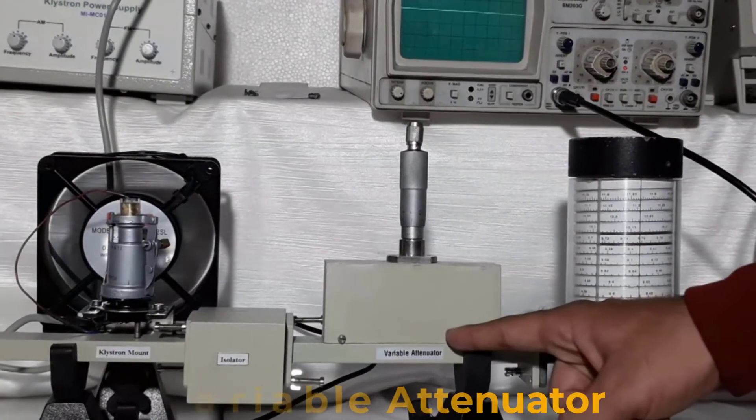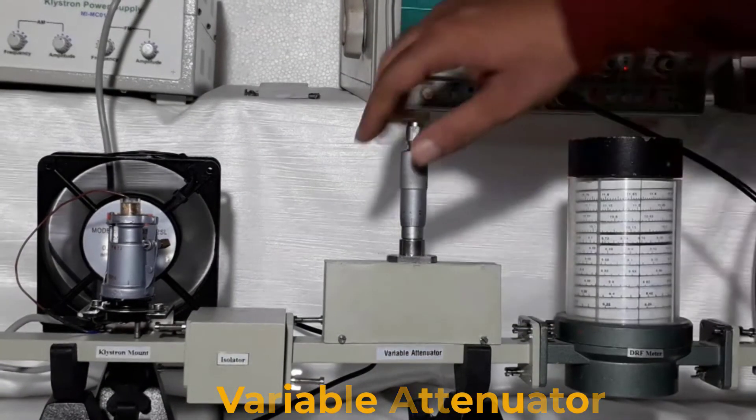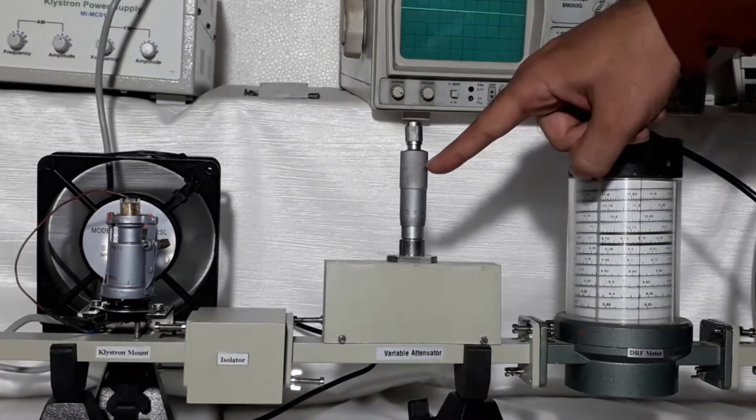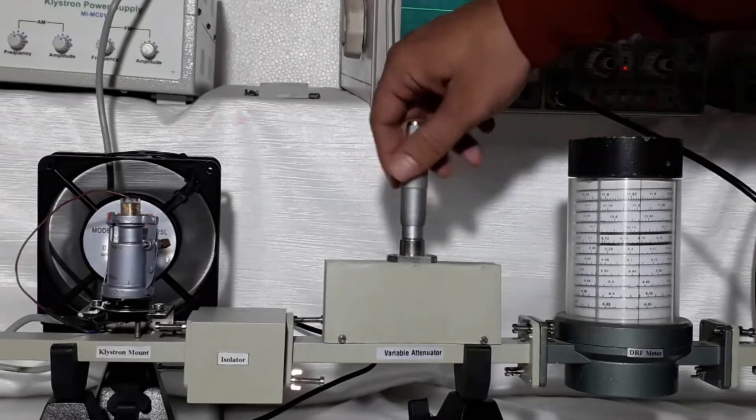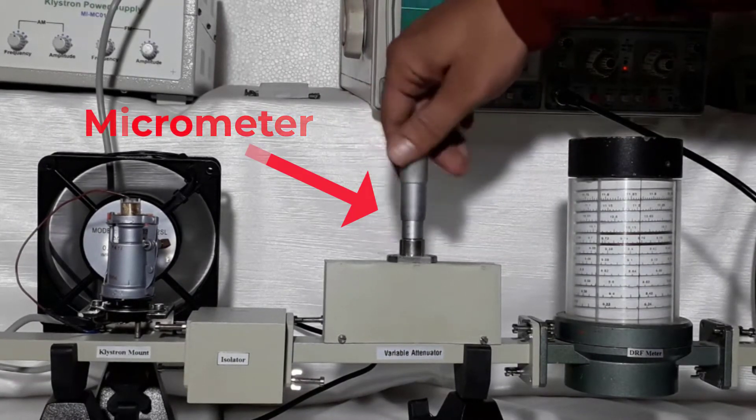Variable attenuator is connected after isolator. This is used to attenuate power of microwave signals. Initially, variable attenuator is set for no attenuation, that means micrometer of variable attenuator is completely open.